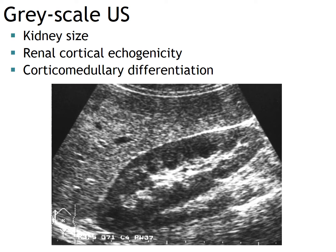With grayscale ultrasound, we measure kidney size, usually maximum longitudinal length, and we evaluate renal cortical echogenicity and corticomedullary differentiation. Renal length depends on height, weight, and body mass index, but the length measured on ultrasound is usually within the range of 9 to 13 cm. Renal cortical echogenicity is usually slightly lower than liver echogenicity on the right side and splenic echogenicity on the left side. The renal medulla has slightly lower echogenicity than the renal cortex, and we call it preserved corticomedullary differentiation.